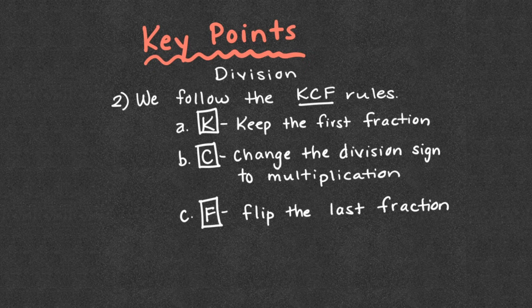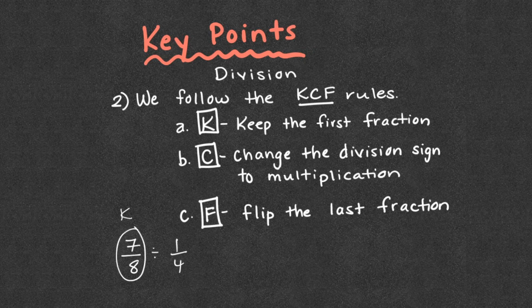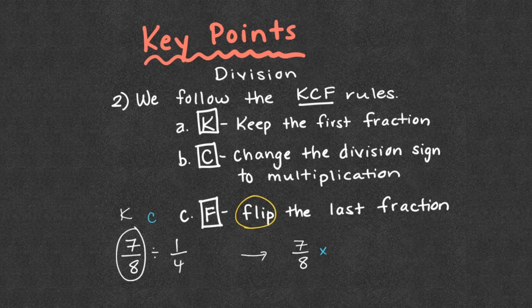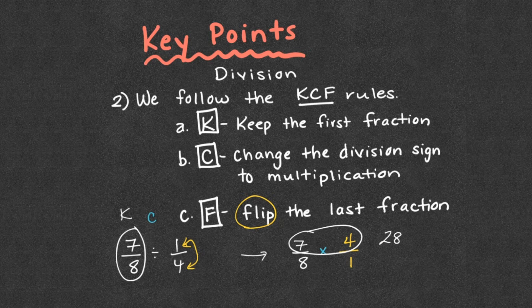We follow the KCF rule — not to be confused with KFC. K means keep the first fraction. So if we had seven-eighths divided by one-fourth, seven-eighths would be kept. C means change — we change the division sign to a multiplication sign. F means flip the last fraction — put the reciprocal. One-fourth becomes four over one. So this division problem has turned into multiplication: seven times four is twenty-eight, eight times one is eight, and then we simplify from there.